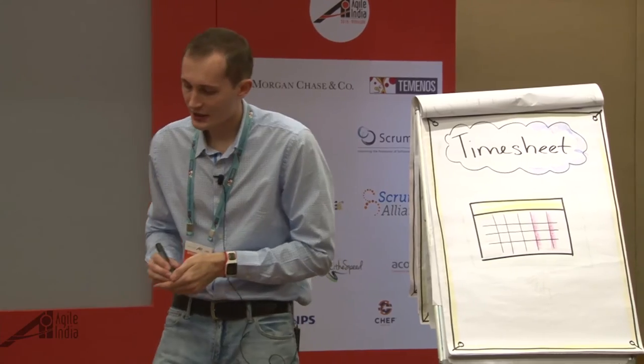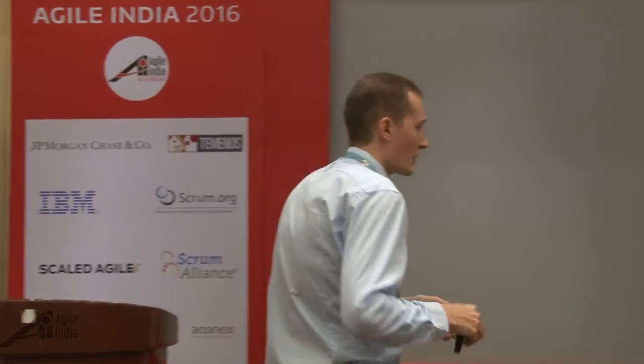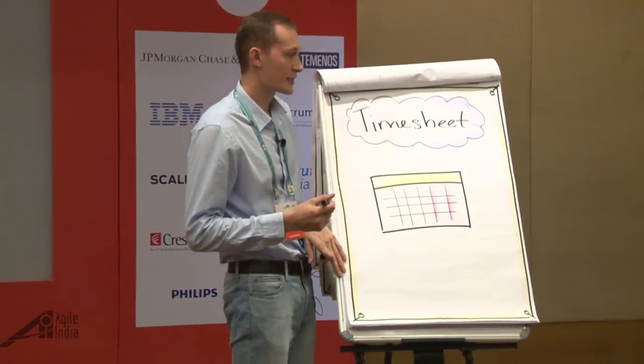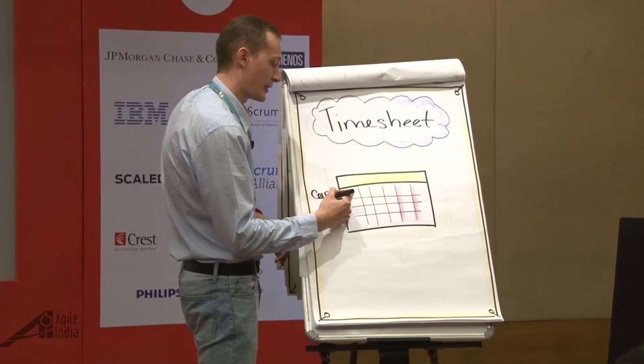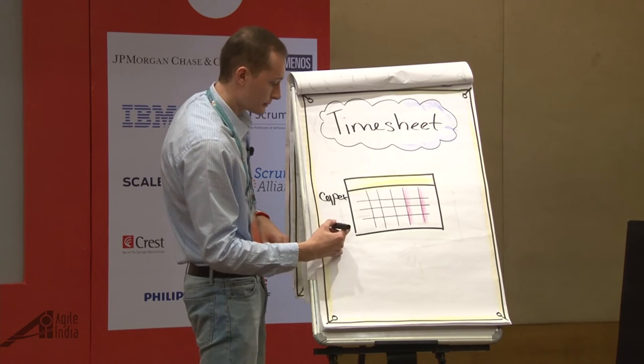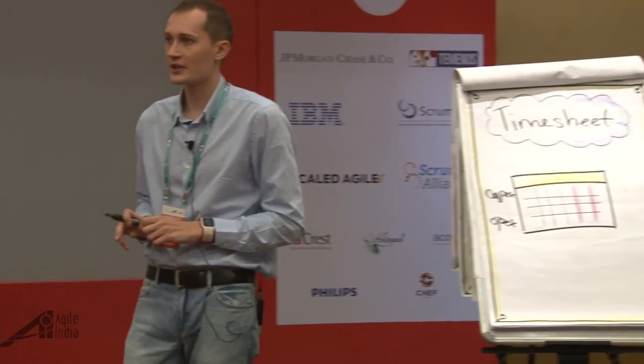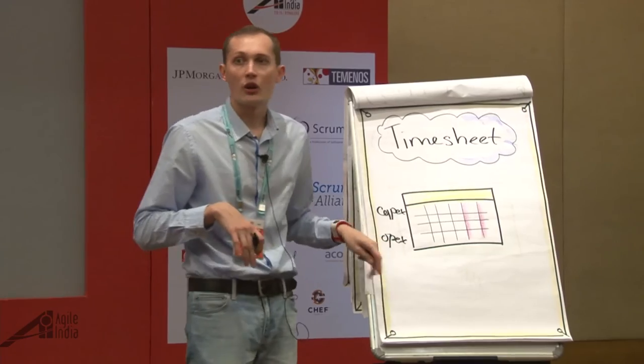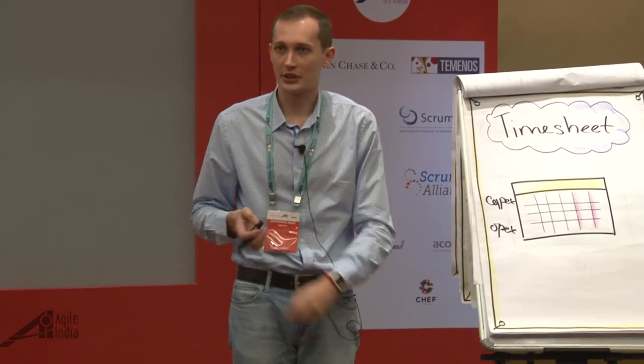Let's talk about timesheets. The reason accountants want you to do timesheets is not because they like you to suffer. Timesheets are financial controls for the organization — to see which activities the team undertakes that are expenses and which are for capitalization, which is spent on building the product. In Agile, you want to simplify your timesheets — probably have two lines: capitalizing activities like development, testing, and creating requirements; and OPEX like bug fixing, maintenance, and training costs.